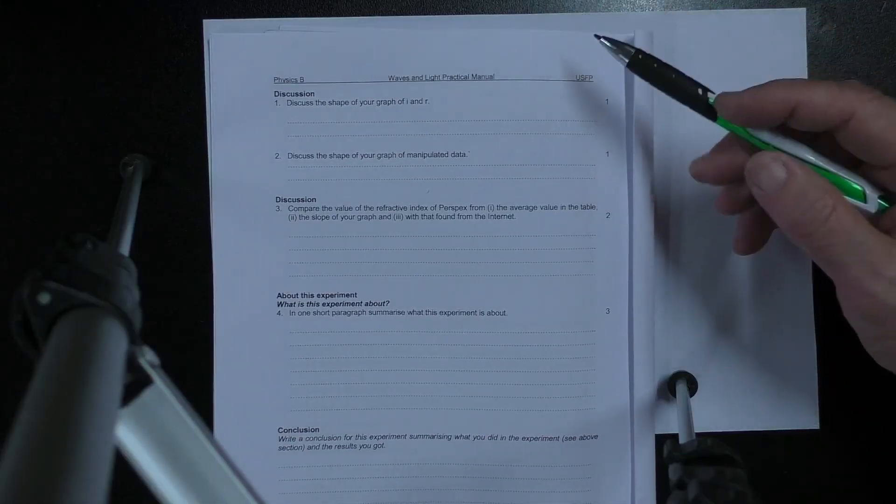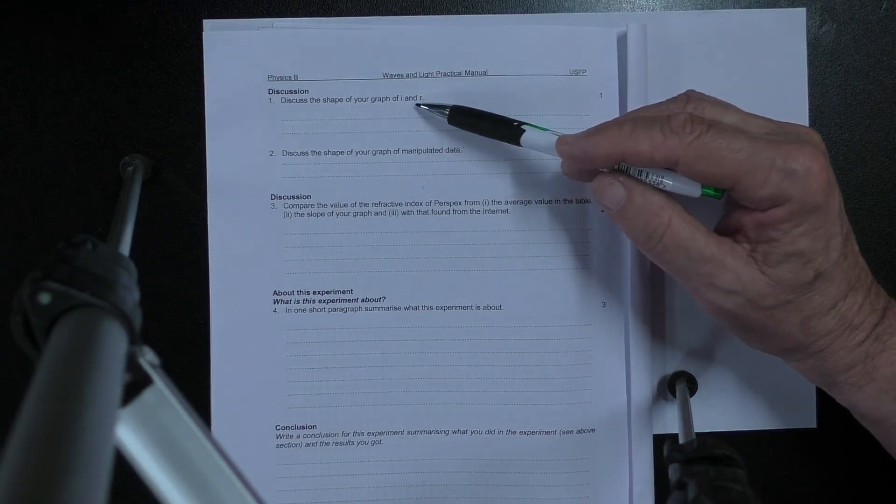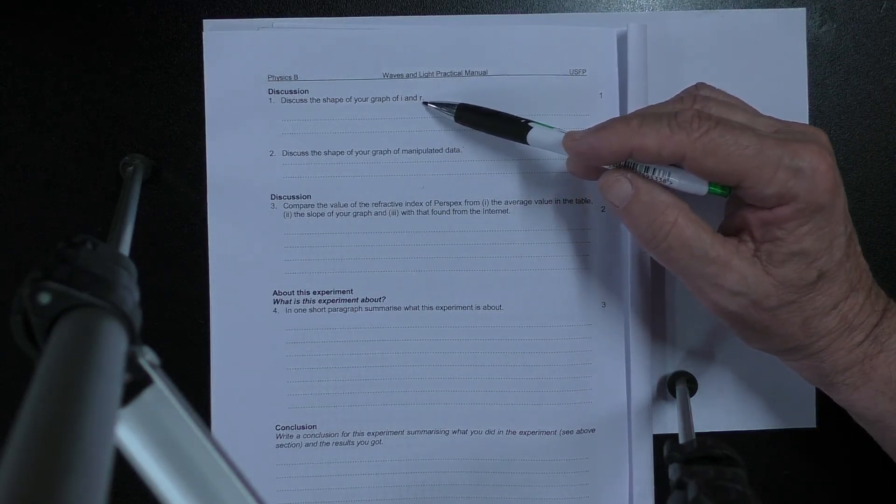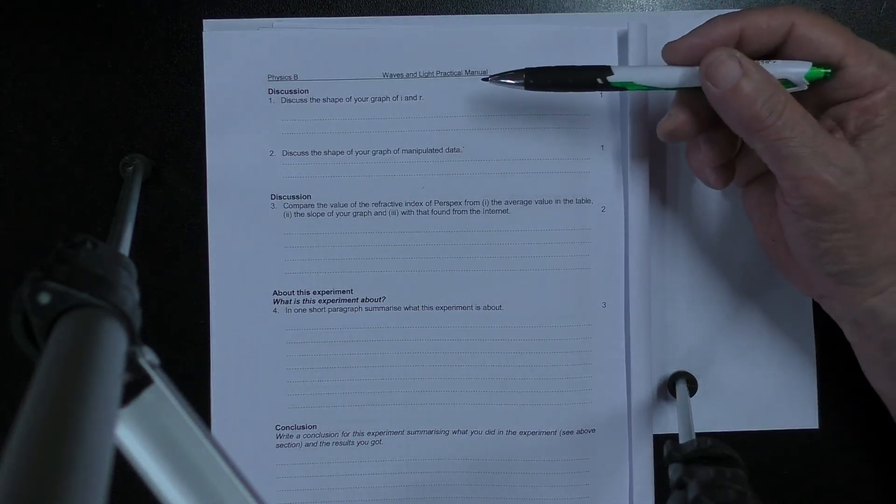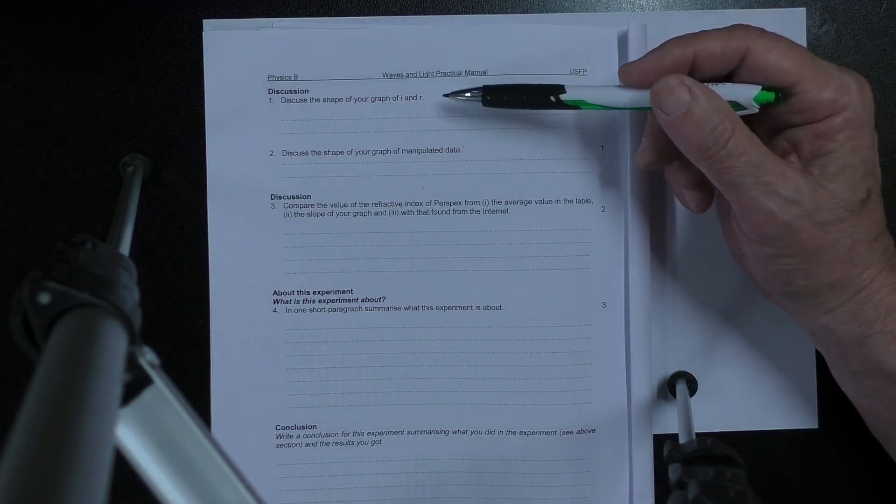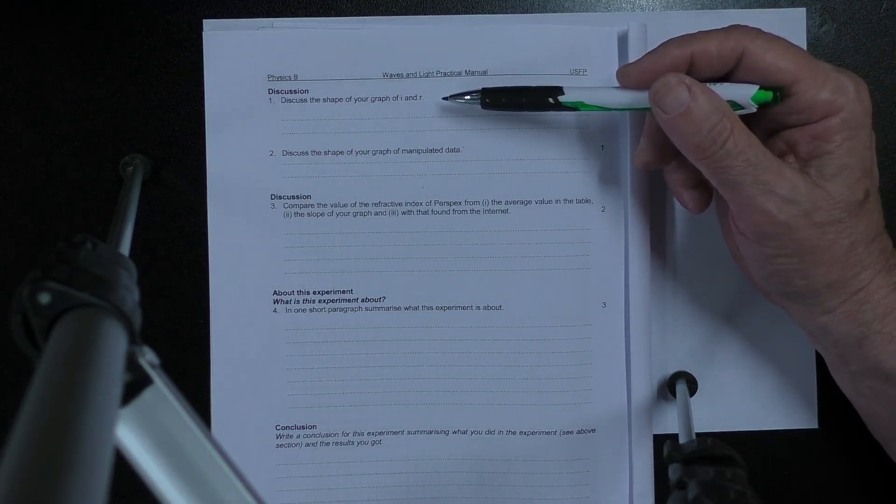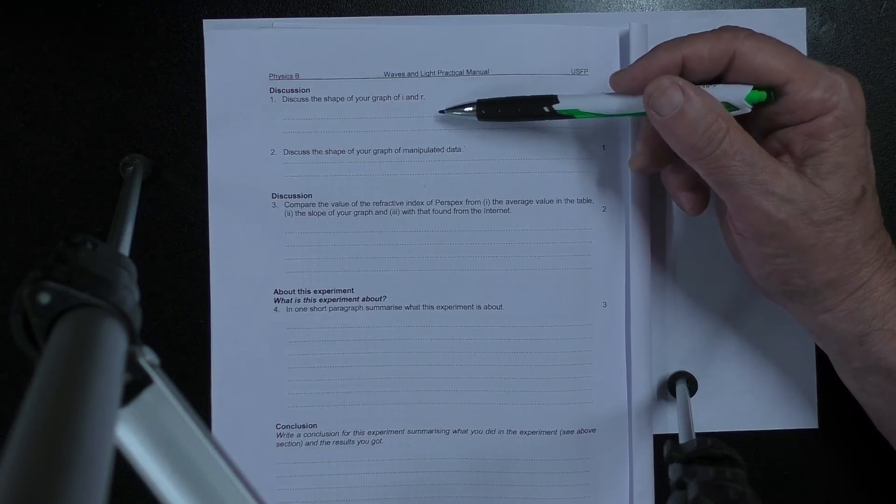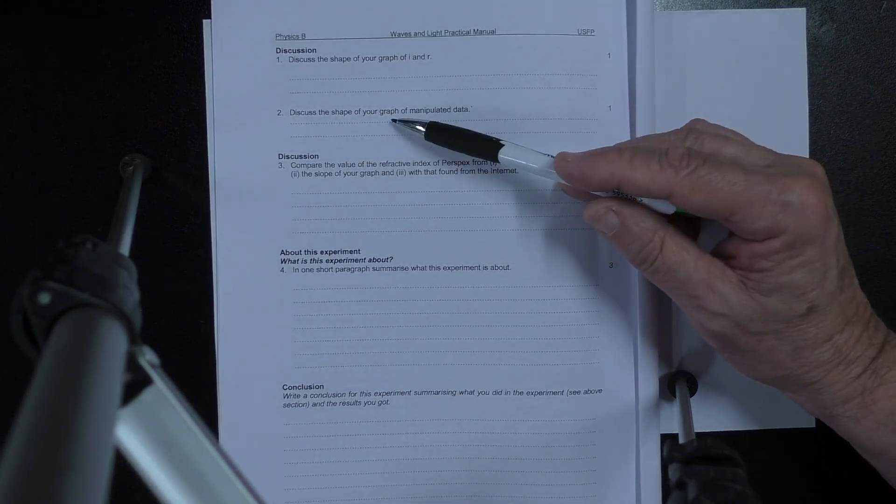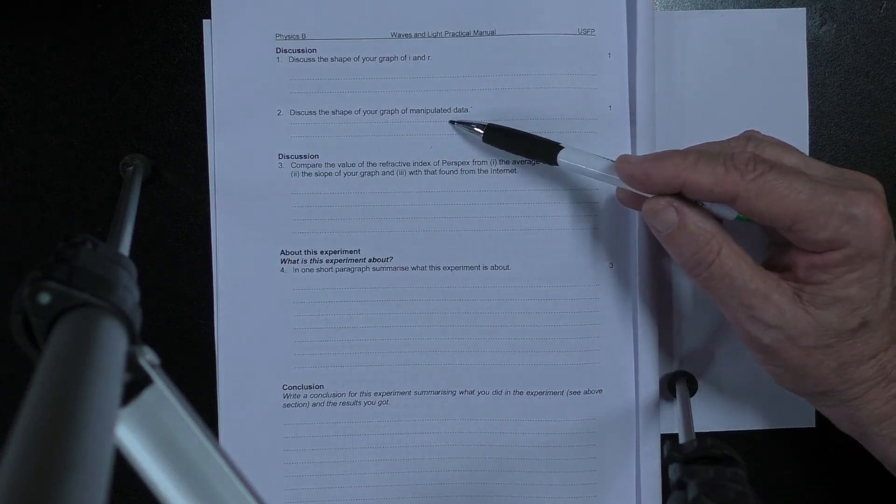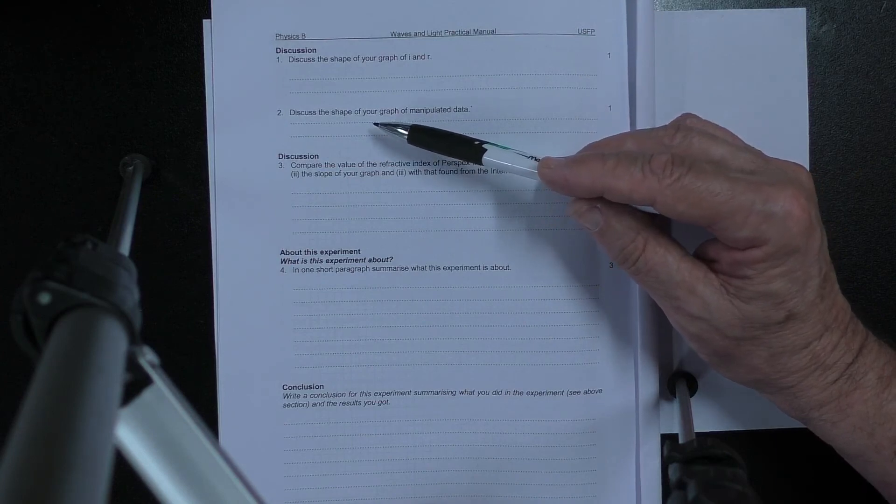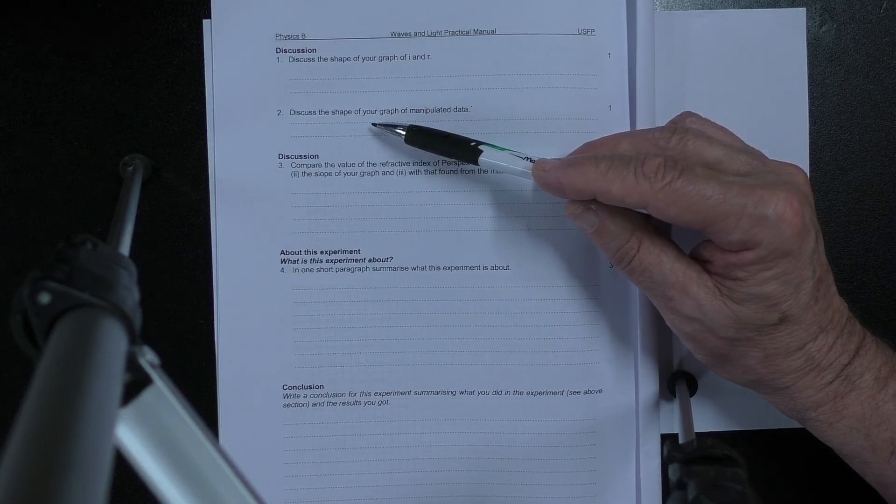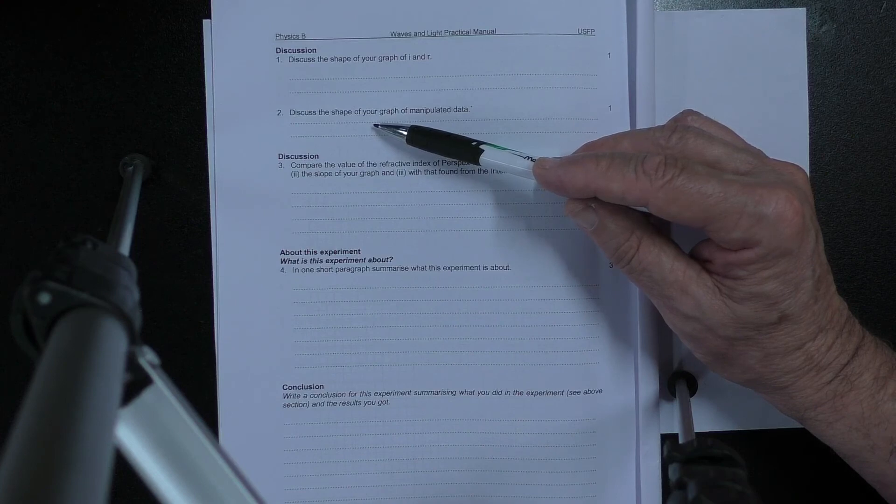So looking over the page, it says discuss the shape of your graph of I and R. If you've got a curve you might say something like this shape indicates that the relationship, the mathematical relationship is not clear. Discuss the shape of your graph of the manipulated data. Well assuming you've got a straight line, what you could then say from this is that the sine of the angle of incidence is proportional or directly proportional to the sine of the angle of refraction.